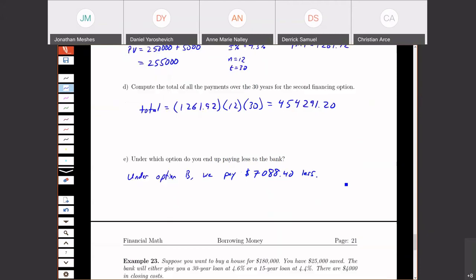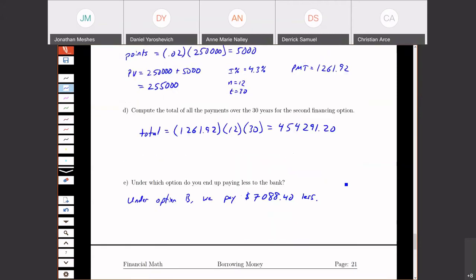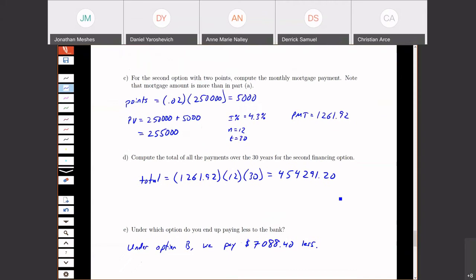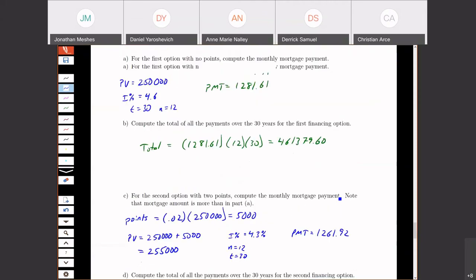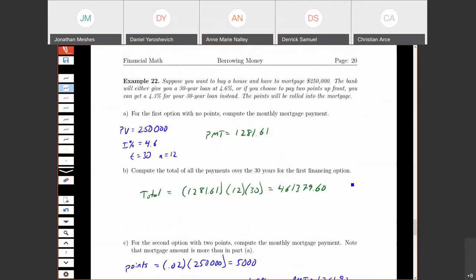Again, these are things to keep in mind when you're making financial decisions. It's not that one option is always better. Option B is better if you stay there the whole time. If you're going to move out in five to 10 years, option A is better. If you're planning on moving in less than five years, don't buy a house, rent instead.